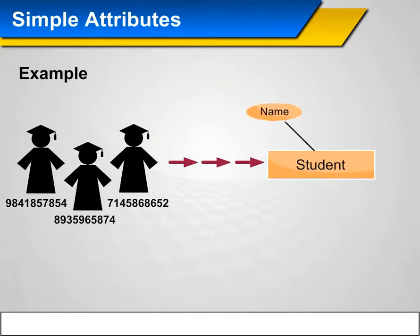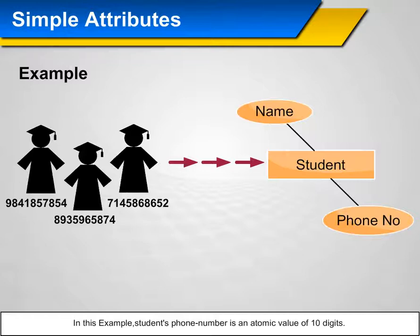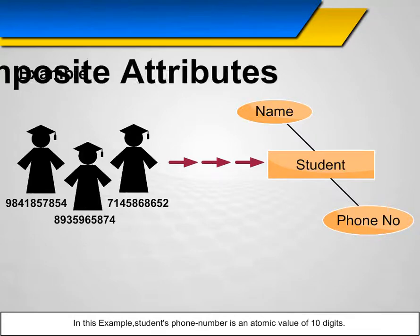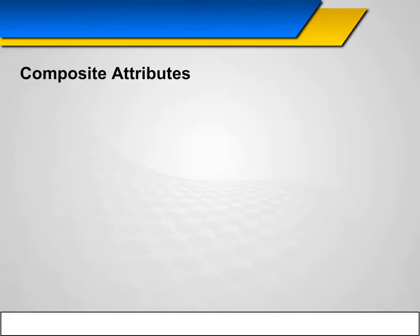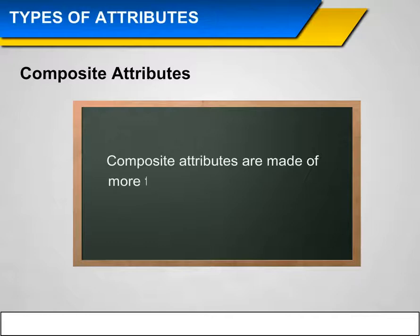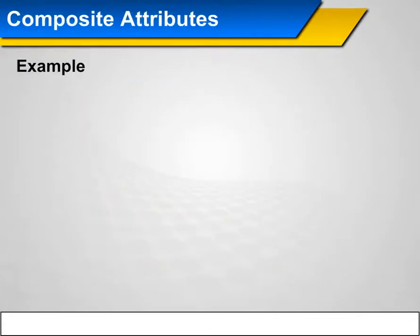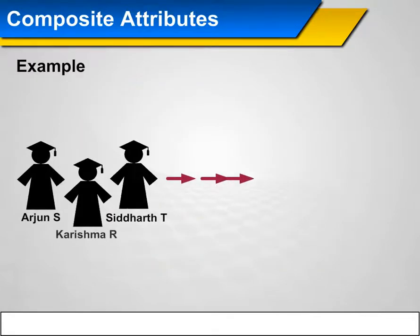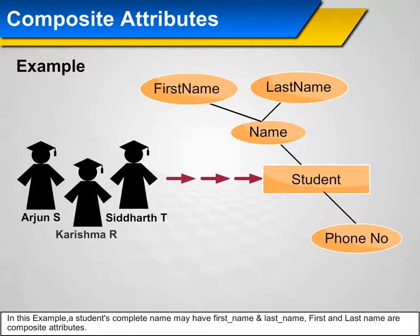Example of Simple Attributes: A student's phone number is an atomic value of 10 digits. Composite Attributes: Composite attributes are made of more than one simple attribute. Example: A student's complete name may have a first name and a last name — first name and last name are composite attributes.